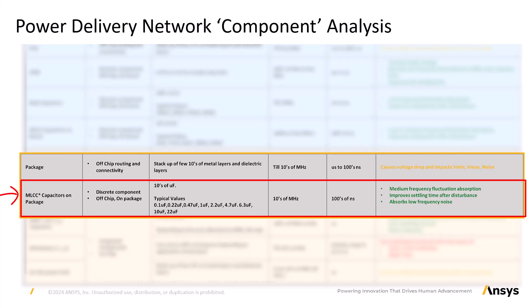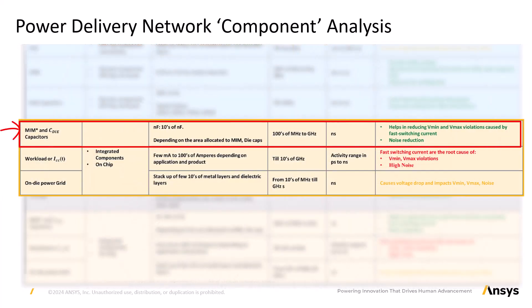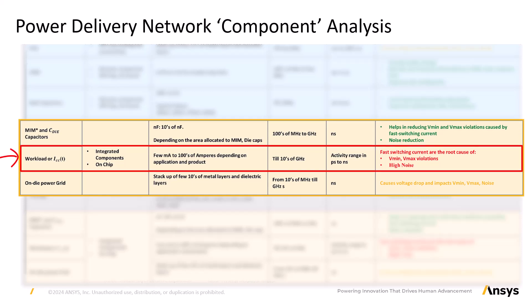MLCC capacitors on package filter out noise on the voltage rail in the tens of megahertz frequency range. They impact how fast the voltage settles to a stable value after a fast transient load change on the PDN. The typical response time is in the range of hundreds of nanoseconds. MIM and CD capacitors are integrated capacitors of the PDN. Their typical values range from picofarads to tens of nanofarads, depending on the area allocation of the die. They help filter high-frequency noise on the PDN and prevent Vmin and Vmax violations. Their frequency of filtering noise on the voltage rail is in the hundreds of megahertz range, with a response time of nanoseconds to fast switching currents.